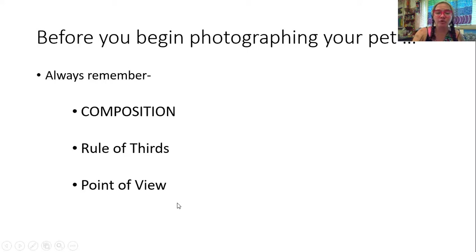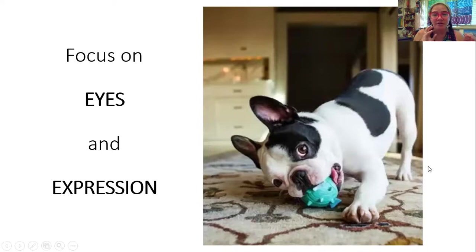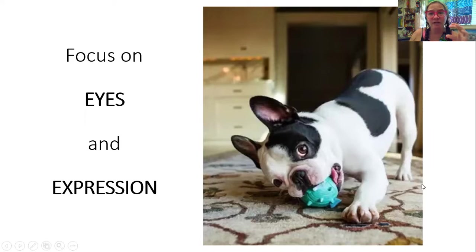When we're talking about pets, there are certain things that are different than taking a picture of your friends or a bowl of cereal, because pets are different than humans. You have to relax. If you have high energy, they're not going to be still. You need them to relax, and they will relax more if you are relaxed when you're shooting. For pets, you want to focus on their eyes and their expression. The eyes are what keep your viewer looking a little longer, and you're going to want the eye of your pet in sharp focus so that you can recreate that depiction onto your different medium.